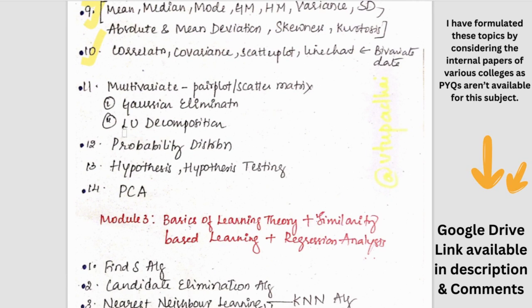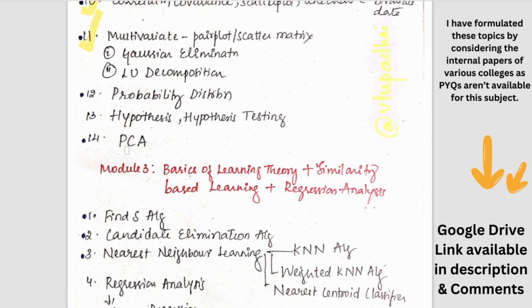Coming to this part, out of Gaussian elimination and LU decomposition one would be asked. So this is important. And then probability distributions - there are three to four types. And then hypothesis and hypothesis testing is a theory topic. It could be asked for three marks or four marks. And then we have PCA problem. So this will be asked.